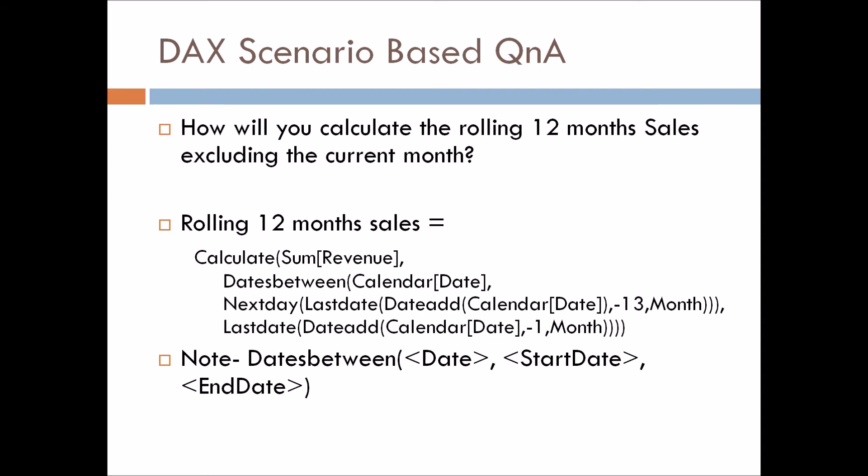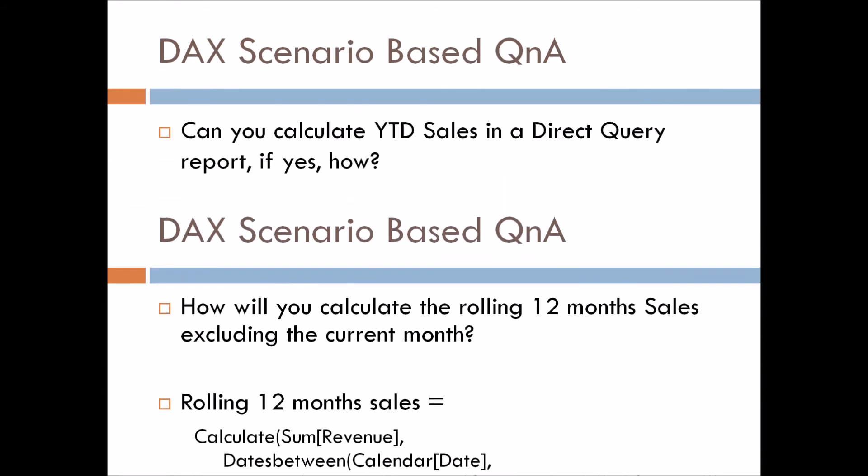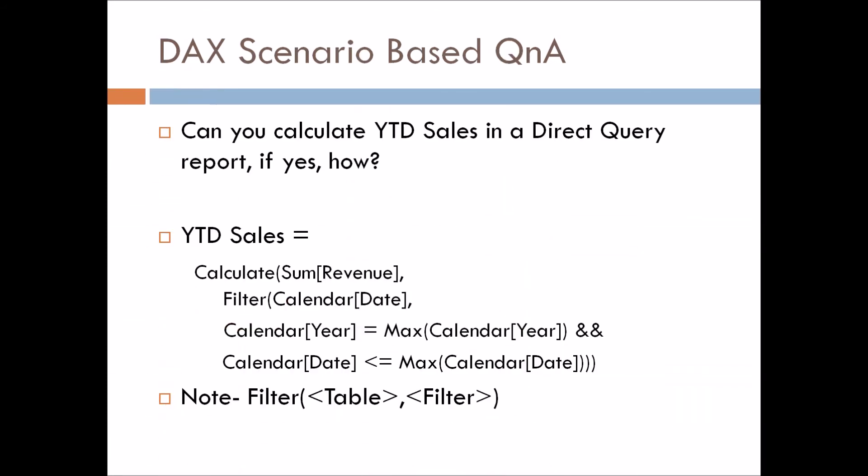Let's move to the third question: can you calculate year-to-date sales in a DirectQuery report? If yes, how? As we all know, in a DirectQuery report we can't make use of time intelligence functions, because in import mode reports we can directly use TOTALYTD, TOTALMTD, or TOTALQTD functions. But if we have to do the same thing in a DirectQuery report, it becomes a problem. So how will we calculate it?